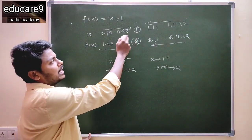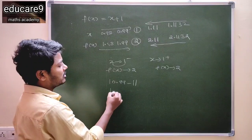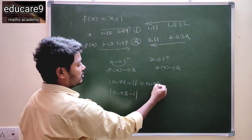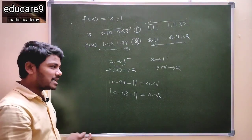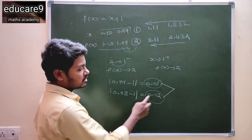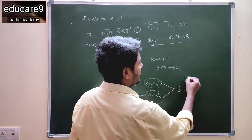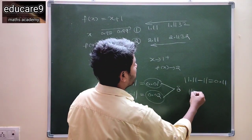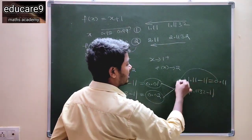See here, x tends to 1, but x is not equal to 1. The difference between 0.99 and 1: modulus of 0.99 minus 1 is 0.01. Modulus of 0.98 minus 1 is 0.02. These are very small values, which can be treated as delta. Also, 1.11 minus 1 equals 0.11, and 1.1132 minus 1 is also a very small value. All these small values are treated as delta, which is positive.